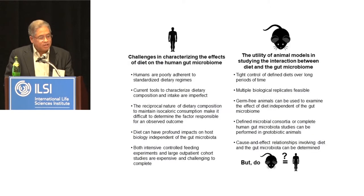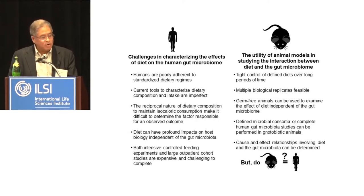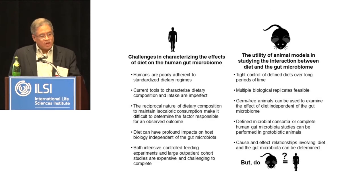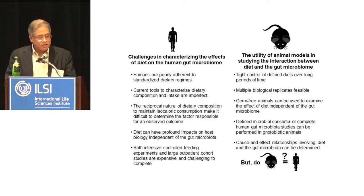There are challenges to characterizing the effect of diet on the human gut microbiome. Humans are poorly adherent to standardized dietary regimens. Current tools to characterize dietary composition and intake are imperfect. There's a reciprocal nature of dietary composition to maintain isocaloric consumption, making it difficult to determine the factor responsible for an observed outcome. Diet can have profound impacts on host biology independent of the gut microbiome. And both intensive controlled feeding experiments and large outpatient cohort studies are expensive and challenging. For these reasons, animal models have significant utility when thinking about diet and the gut microbiome.